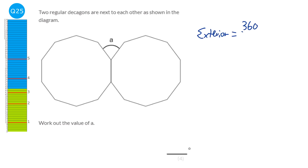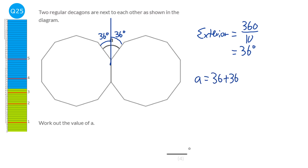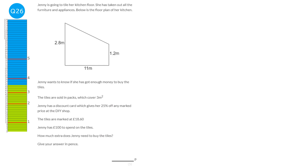To find the exterior angle of any regular polygon, do 360 divided by the number of sides. These are decagons, which have 10 sides, so each exterior angle is 36 degrees. Angle A is made up of one exterior angle from each decagon: 36 + 36 = 72 degrees.